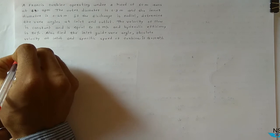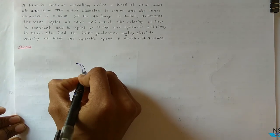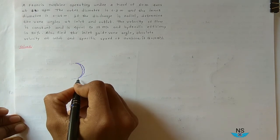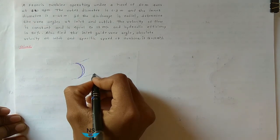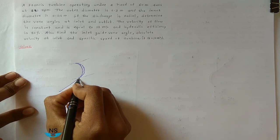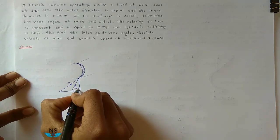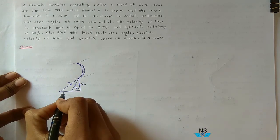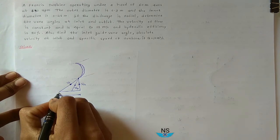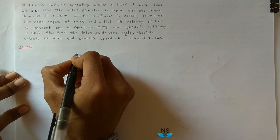Let us go through the given values and draw the velocity diagram or velocity triangle at inlet and outlet. This is one of the vanes of the turbine. The outer side of the runner is the inlet of the turbine for a Francis turbine. This is the inlet velocity triangle. The absolute velocity at inlet is V1, the relative velocity at inlet is Vr1, the velocity of flow at inlet is Vf1, the whirl velocity at inlet is Vw1, and the peripheral velocity of the runner or vane is u1.